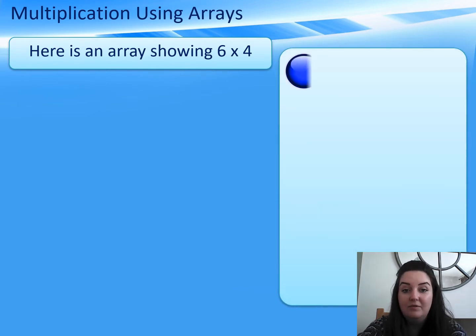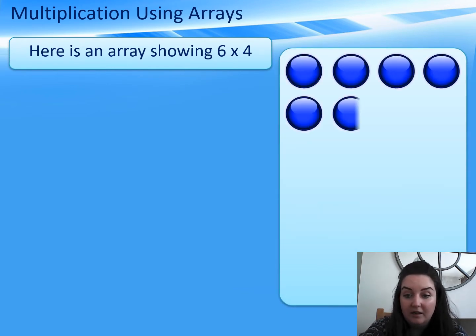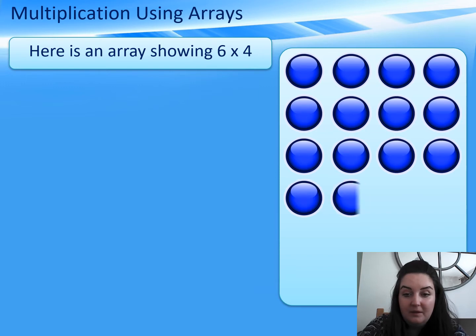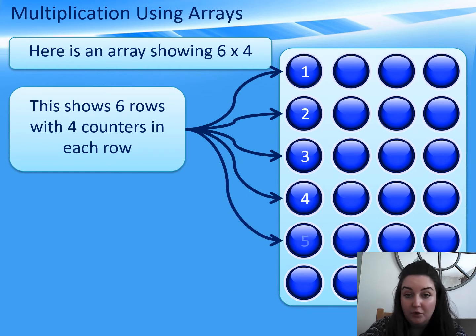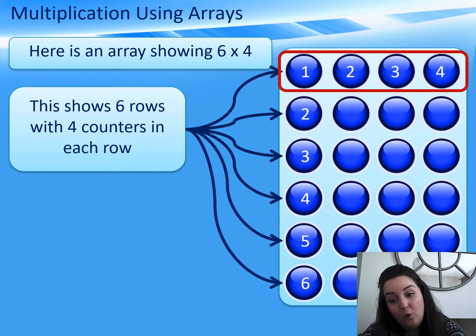Here is an array showing 6 times 4. This shows 6 rows, so 6 groups, 6 equal groups of counters with 4 in each row.